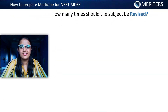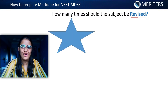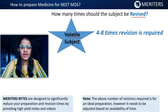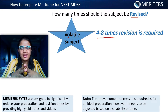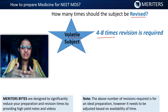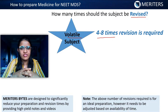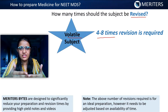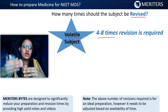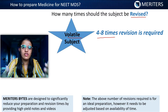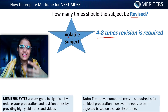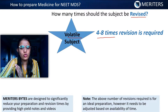How many times should this subject be revised? General medicine is a very volatile subject, so it is advised that you revise it around 4 to 8 times depending on time availability. This does not mean you complete 4 times in one day. Do your first revision, then wait for a week and go for your second revision, then wait for a month and go for your third revision. In your entire course of preparation, you should revise general medicine at least 4 times.